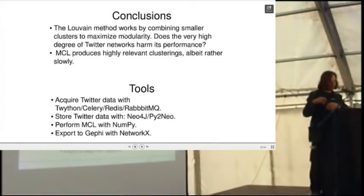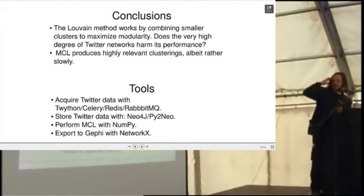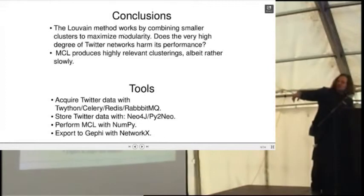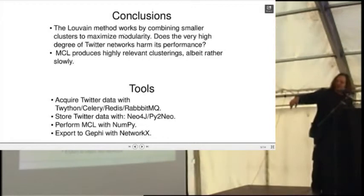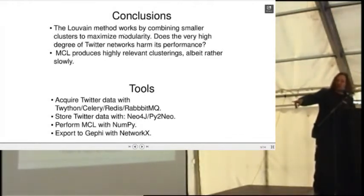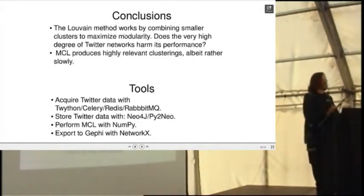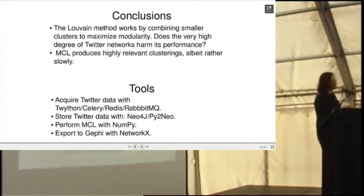I've seen the Louvain method or the informal layout method work quite well for other humanities-type data, but when the degree of the network is much less than that of Twitter. One good example was a graph of which Egyptian scribes had which customers in a particular town. Shout out to the tools: Twython, Celery, Redis, RabbitMQ for acquiring the Twitter data; Neo4j to store it; NumPy to do the crunching; Gephi for the pictures; and the nice Python library NetworkX. Any questions? Or rotten fruit? That was probably somewhat more than ten minutes.